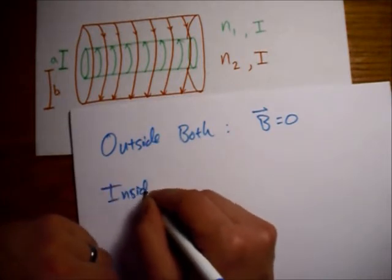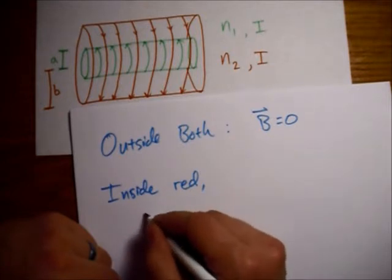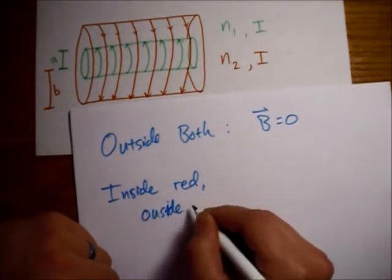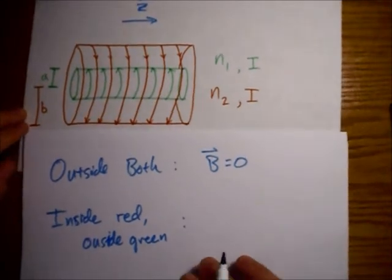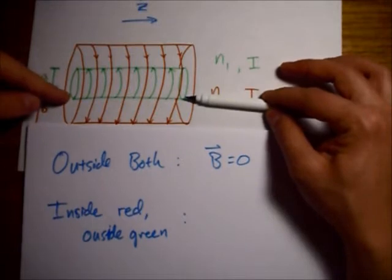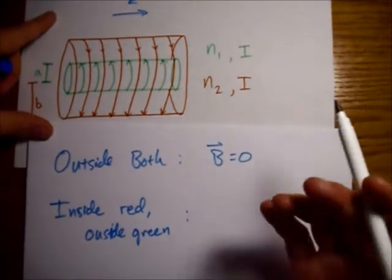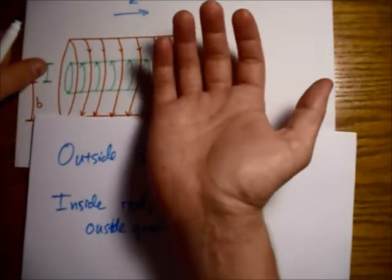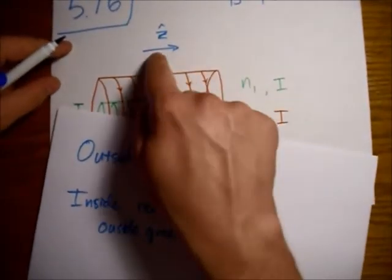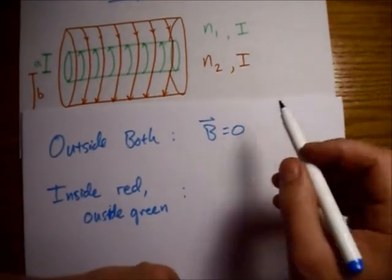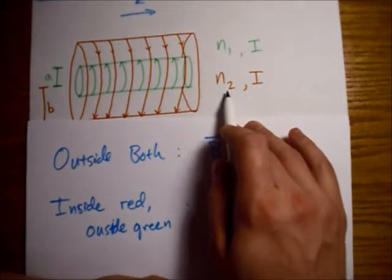How about inside red, outside green? So inside red and outside green, the green one is still contributing zero because we're outside of it. So all we have now is the red one to worry about. And by the right-hand rule, because the current is going around like this, the field will point this direction, which is the z-hat direction. And since we're only inside the red solenoid, only the red n is going to matter. That is n2.